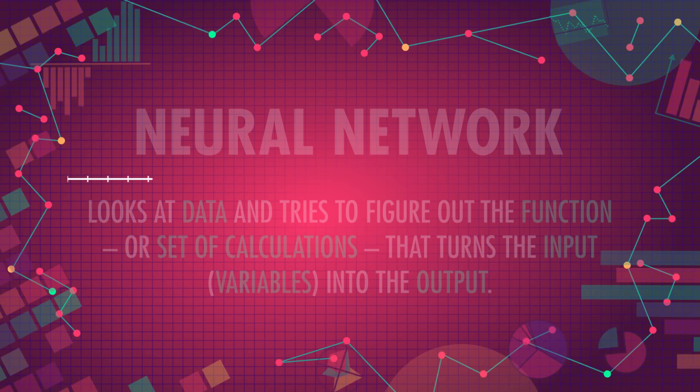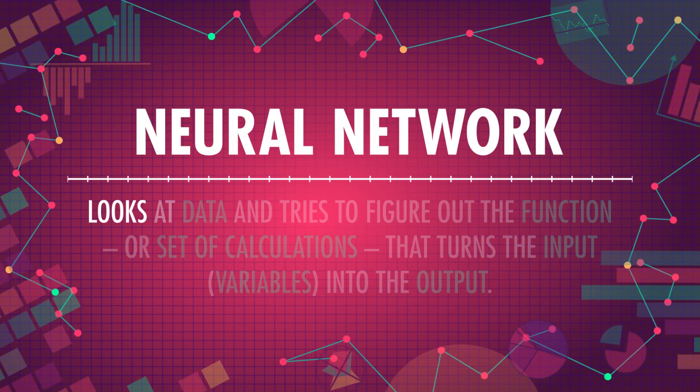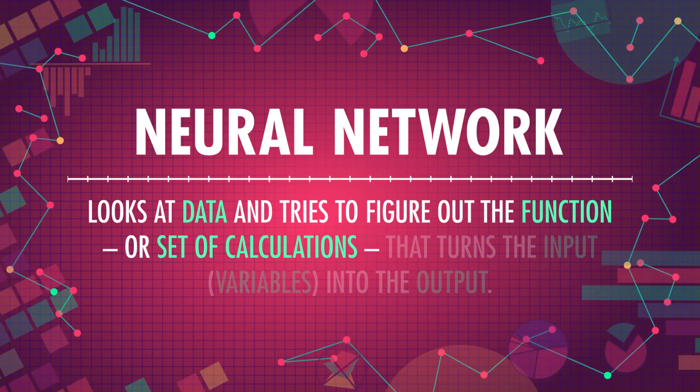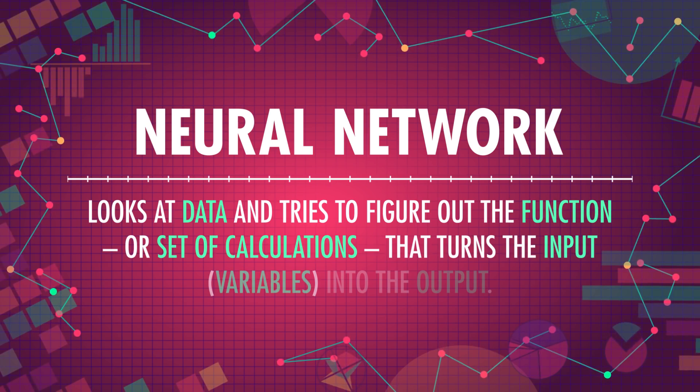In Crash Course Computer Science, we talked a little bit about what a neural network is. In the simplest sense, a neural network looks at data and tries to figure out the function, or set of calculations, that turns the input into the output. That output could be a number, a probability, or even something a bit more complicated. Neural networks are analogous to robots that can learn to make things, like a toy car, not by following step-by-step instructions from humans, but by looking at a bunch of toy cars and figuring out, for itself, how to turn inputs, like metal and plastic, into outputs — the toy cars.